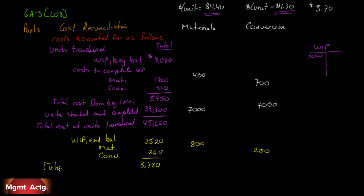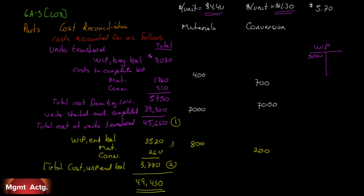Adding those together gives $3,780 — the total cost of the work in process ending balance. We now have our ending work in process balance and the total cost of units transferred. All that's left is to total: $49,430. This number should equal the total cost from section 2 — the costs to be accounted for up top. That completes problem 6A3.